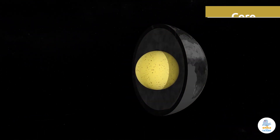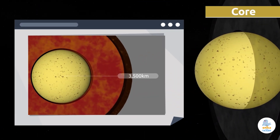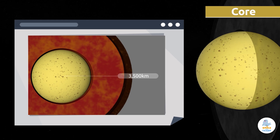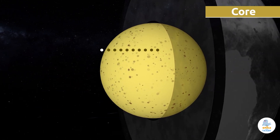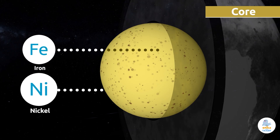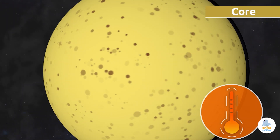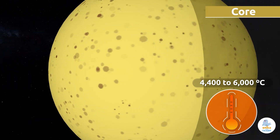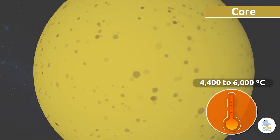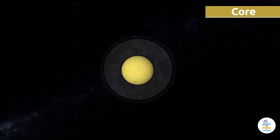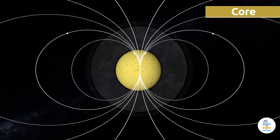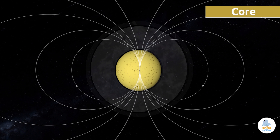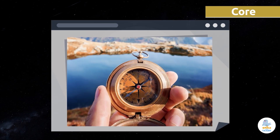The core is the innermost layer of the Earth, and it is 3,500 kilometers thick. The inner part of the core is made up of solid iron, while the outer part is made up of liquid iron and nickel. The temperature in the core is ultra-high, ranging from 4,400 to 6,000 degrees Celsius. The wide ranges of temperature and pressure in the outer core cause the molten metal to move, resulting in the formation of electric currents that produce magnetic fields. Thanks to these magnetic fields, we are able to use instruments like the compass!